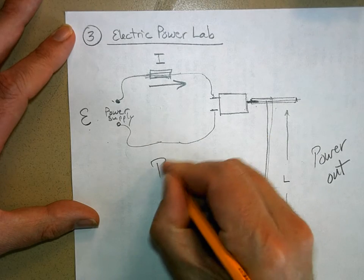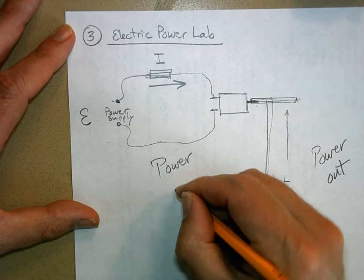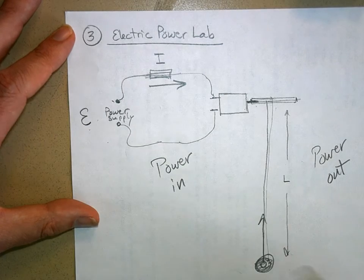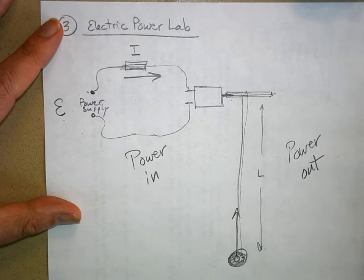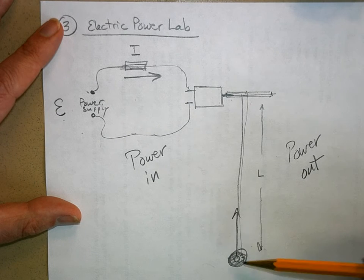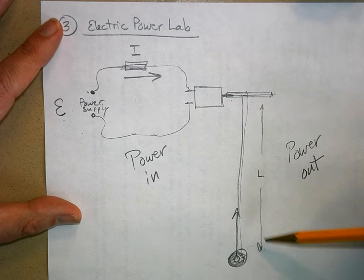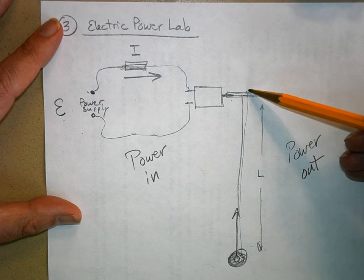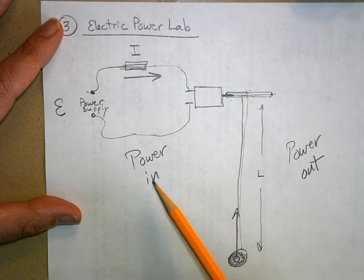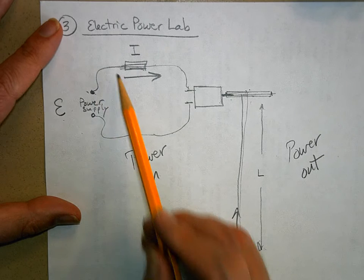So this will be the power in. The power out is going to be the potential energy that we gave this thing divided by the time it took to lift this thing up. The power we put into it is going to be the voltage times the current.